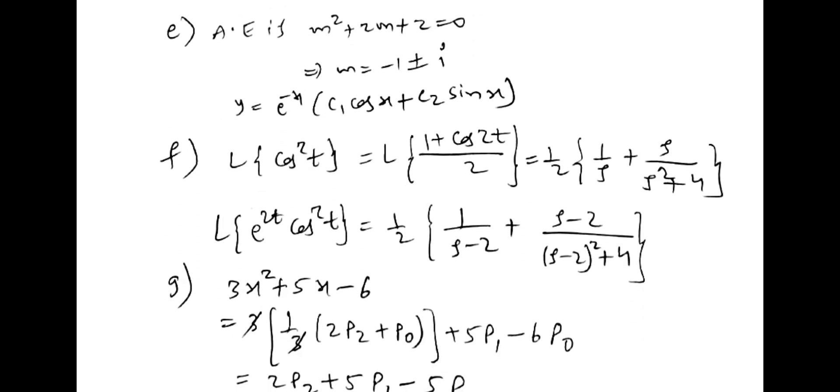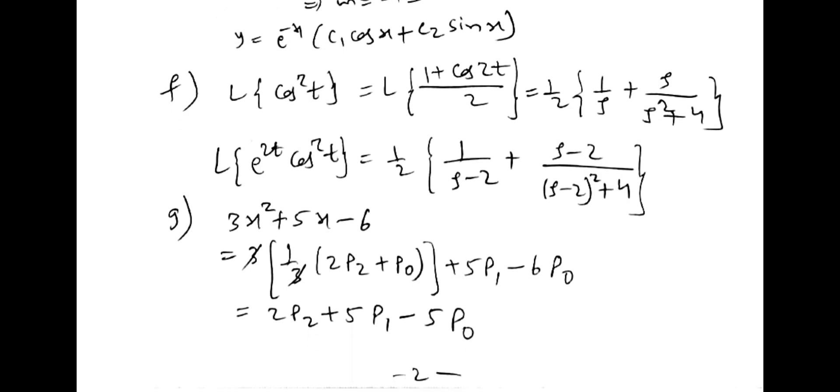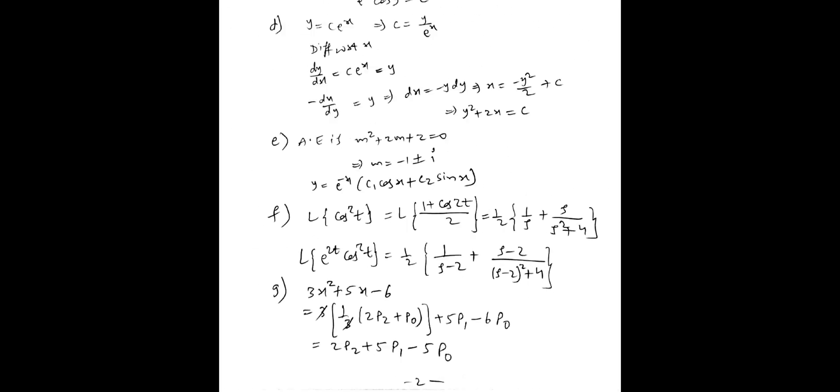Then cos square t can be written as 1 plus cos 2t by 2. So 1 by 2 and separate it. Cos 2t by 2. So 1 by 2 is 1 by s. Cos 2t is s by square plus 4. Then using first shifting property in place of s you have to write s minus a. G bit is asking Legendre polynomials. If you know the value of x square and x, you can substitute in that.